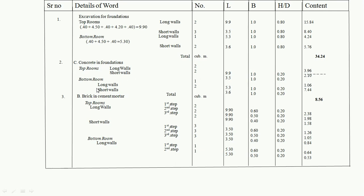For the bottom room cement concrete: long wall (1 wall) length = 5.3 m, depth = 0.2 m, quantity = 1 × 5.3 × 1 × 0.2 = 1.06 m³. Short walls (2 walls) length = 3.6 m, depth = 0.2 m, quantity = 2 × 3.6 × 1 × 0.2 = 1.44 m³. Total cement concrete in foundation = 3.96 + 2.10 + 1.06 + 1.44 = 8.56 m³.